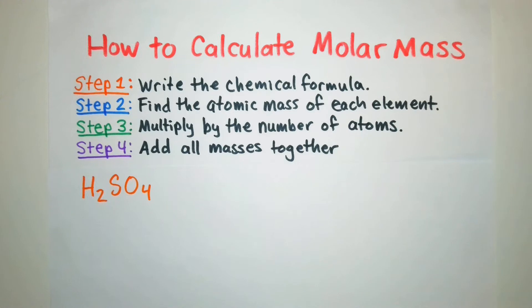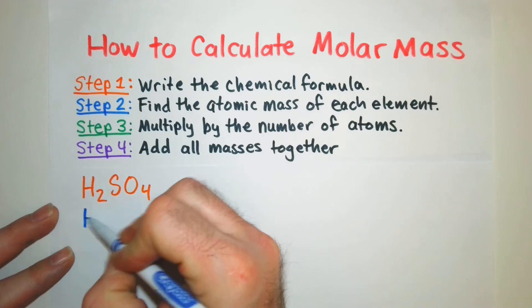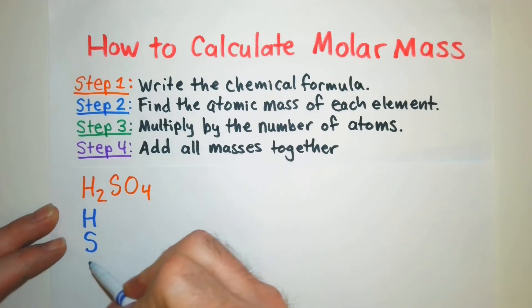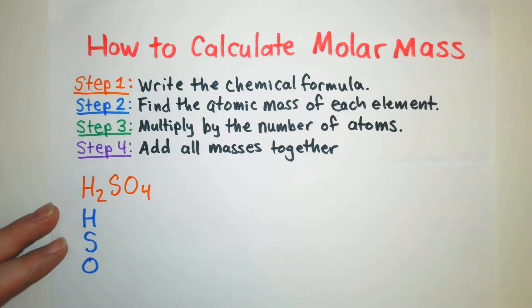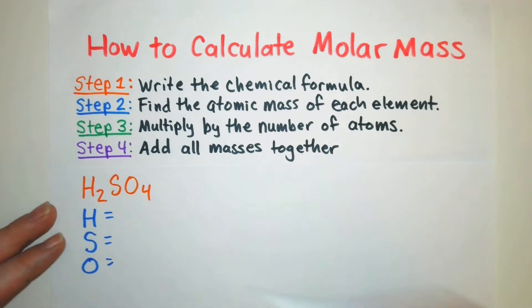Okay so for the atomic masses of each element I'm just going to go ahead and list each of those elements. We've got hydrogen, we've got sulfur, and we have oxygen. And so we're going to look those up on that periodic table.